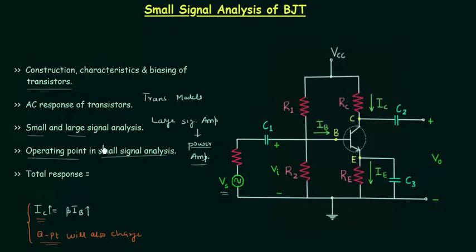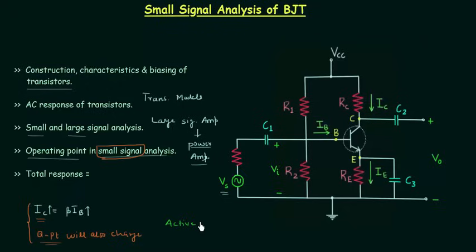A small signal is the signal having magnitude sufficiently small to keep the transistor in the active region. We want to keep the transistor in the active region because we want to use it as an amplifier. In the active region we have amplification of the weak input signal — the collector-base junction is reverse biased and the emitter-base junction is forward biased.